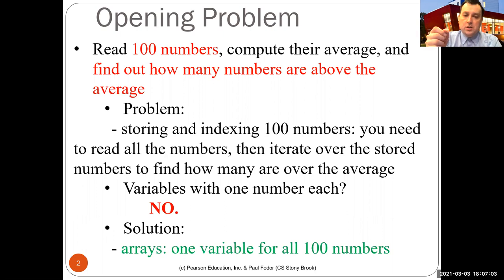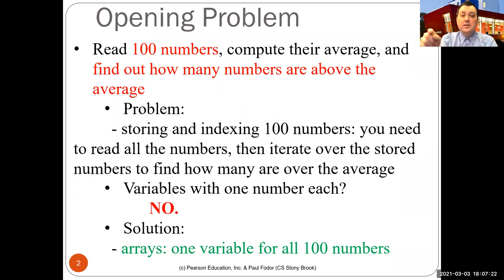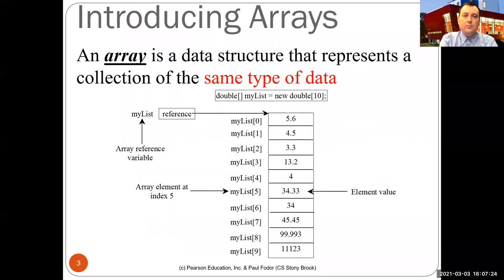The solution for compact and efficient code is arrays, where you have one single variable for all 100 numbers and can use indices in that array to access every single individual indexed variable. So what is an array?